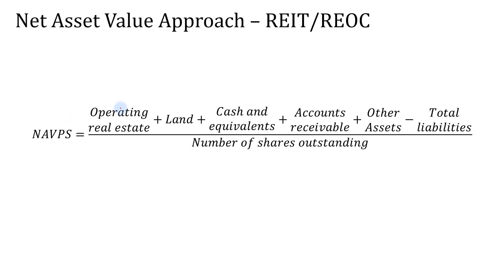The net asset value per share is the difference between a real estate company's assets and its liabilities, all taken at current market values instead of accounting book values, and then divided by the number of shares outstanding. In the formula, net asset value per share equals the operating real estate value plus any land, cash and equivalents, accounts receivables, and other assets, minus total liabilities, divided by the number of shares outstanding.